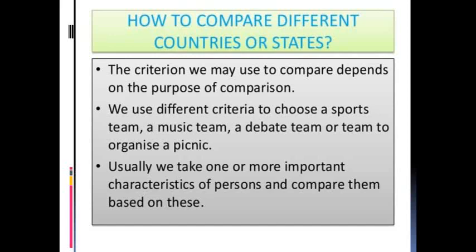What should be the criteria, or what is the purpose of comparison? On the basis of the purpose of comparison, criteria should be set. For comparing countries, their income is considered to be one of the most important criteria. Income is the major criteria used to compare country to country or state to state. When we speak about income, we look at average income — calculated by dividing total income by total population — and this is also known as per capita income, or per head income.